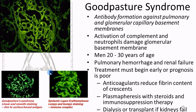Goodpasture syndrome is an autoimmune disorder where the body makes antibodies against the glomerulus itself — a type 2 hypersensitivity attacking a specific tissue. It typically affects men between 20 and 30 years of age. Problems with the kidney develop and can spread to cause pulmonary hemorrhage or complete renal failure.